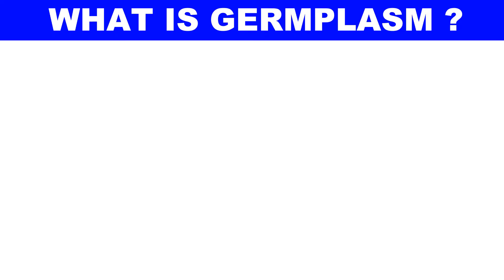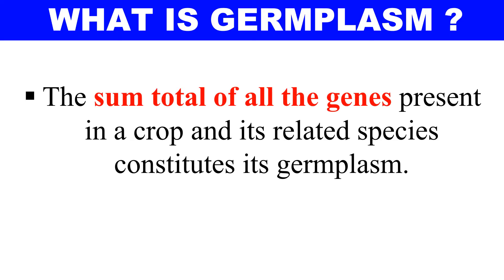First of all we should know what is germplasm. Germplasm is the total of all genes of a particular crop or a plant and its related species — they make the germplasm. So ultimately, germplasm is the sum of all genes present in a particular crop. Here we are discussing how we can preserve these genes for future use, so that in future we can use them for various research purposes and for the growth of that particular plant.